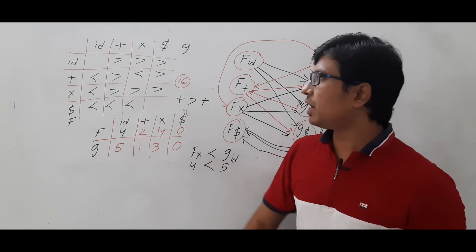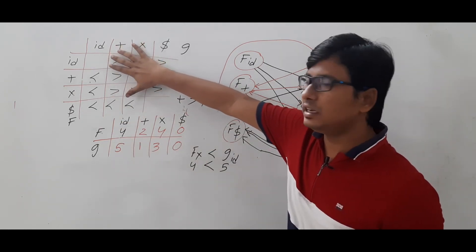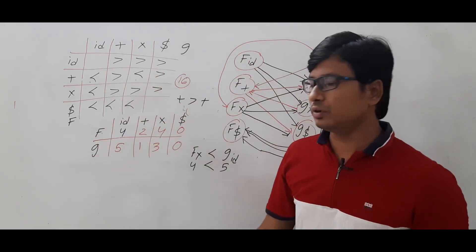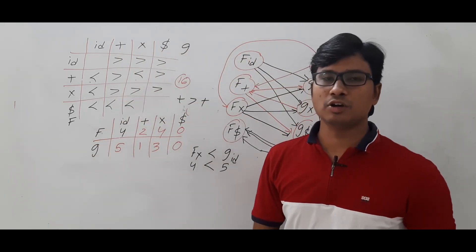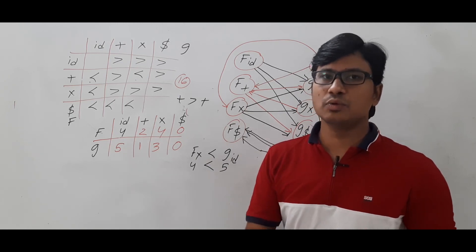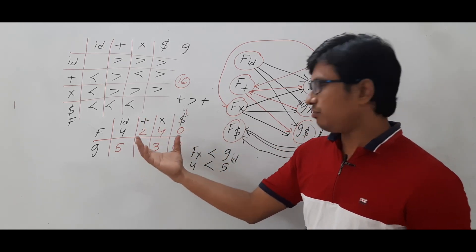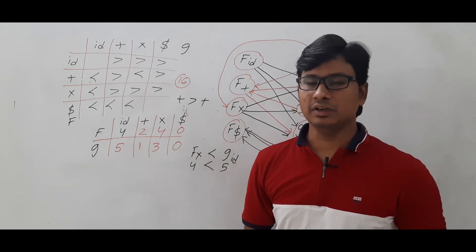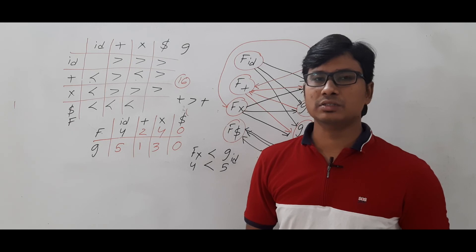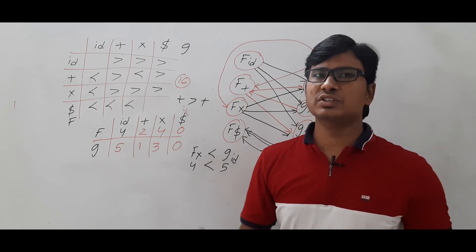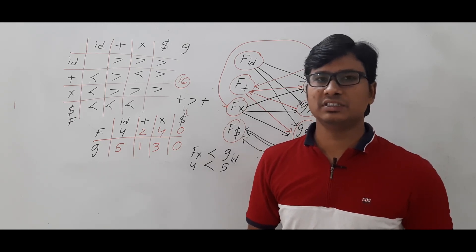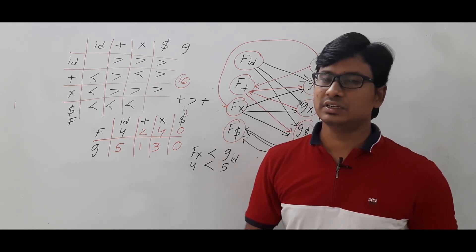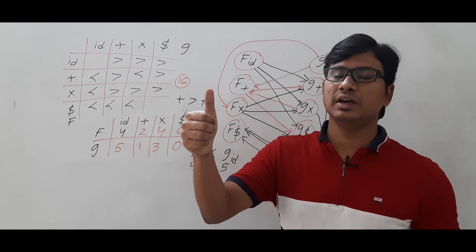I hope you have understood how to convert the relational table to the graph, and from the graph to the functional table. The functional table occupies less space — that is the main advantage — though constructing it is a bit more complex than the relational table. If you still have doubts, feel free to ask in the comments. I will try to clear your doubts within 24 hours. Thank you for watching, have a nice day.